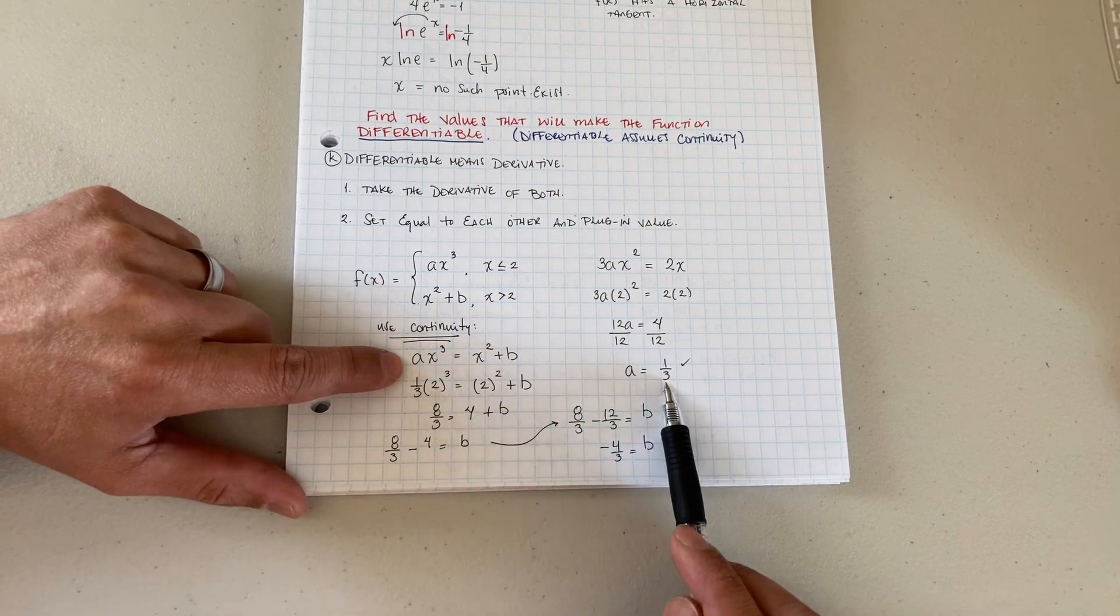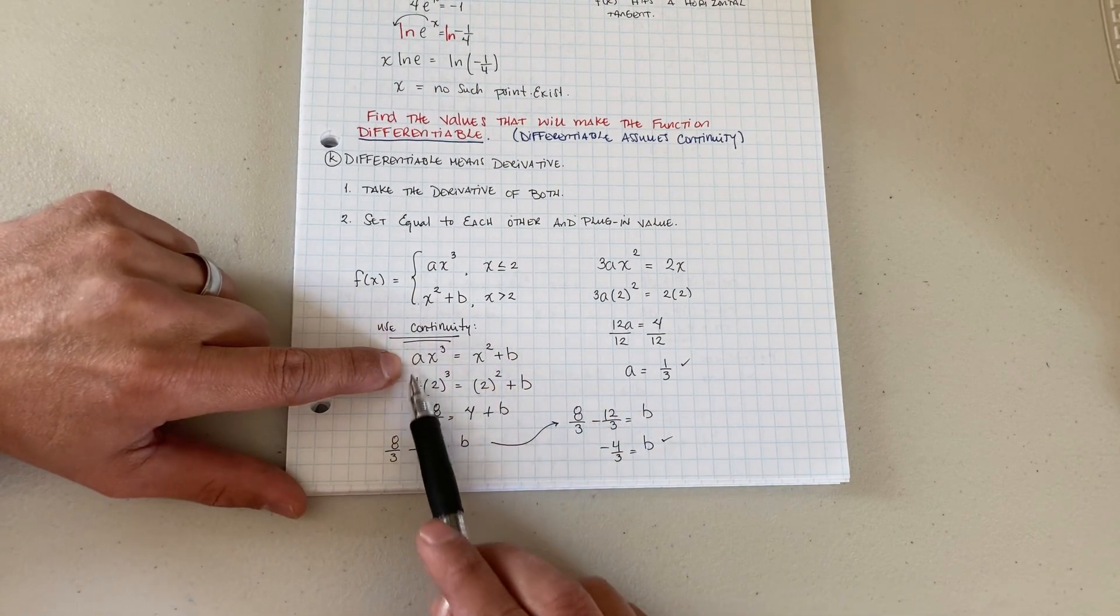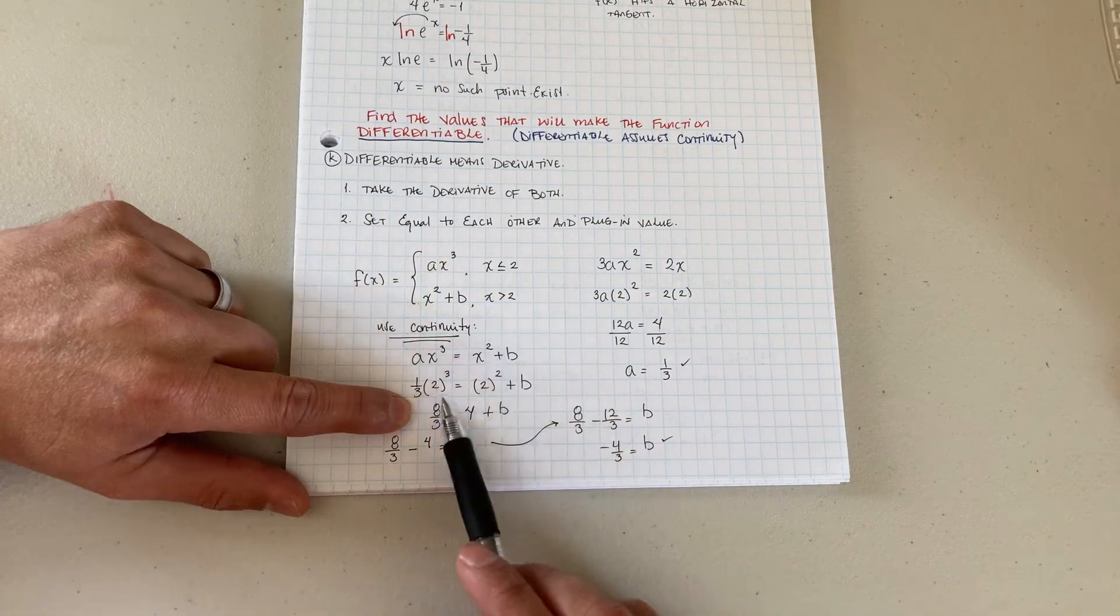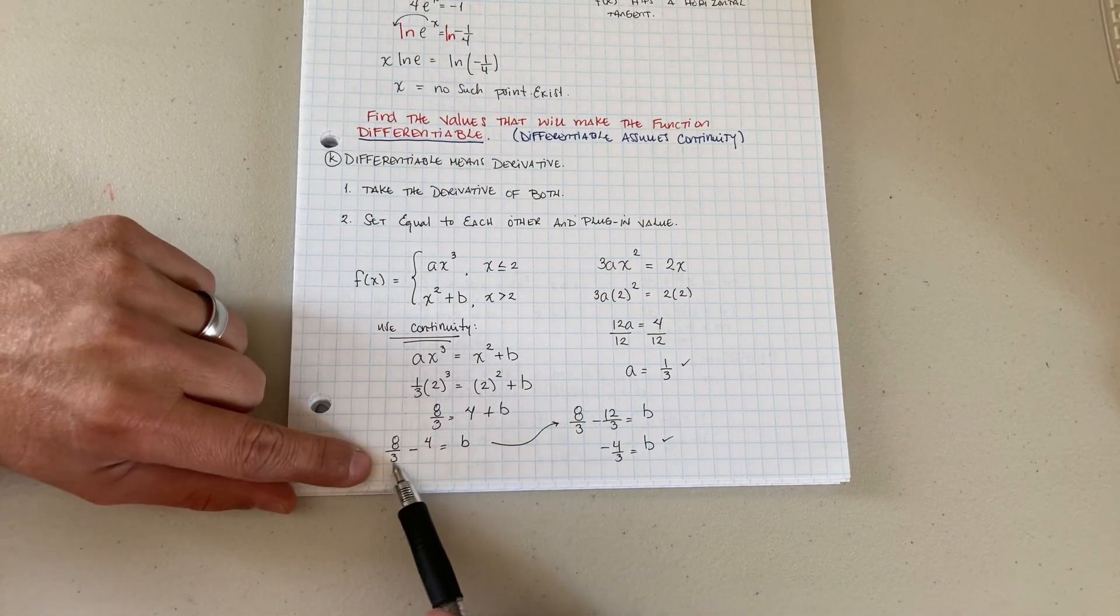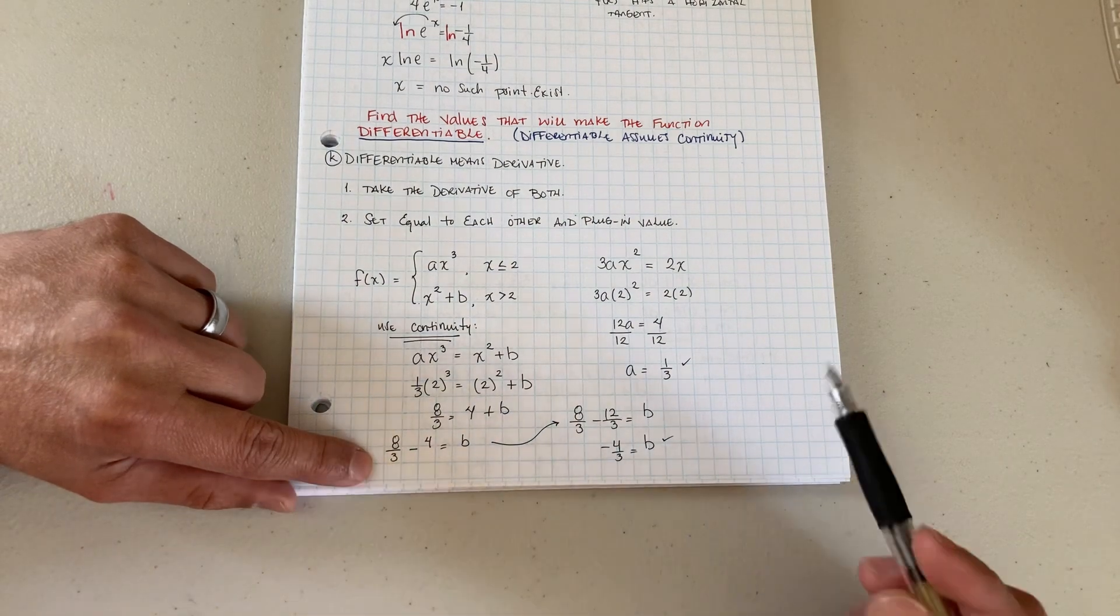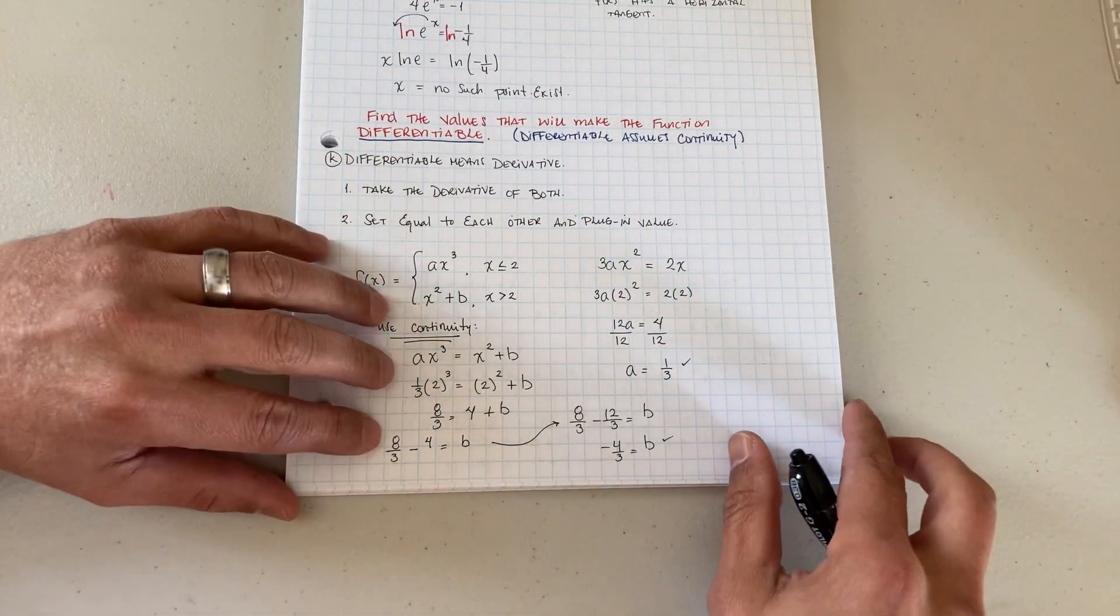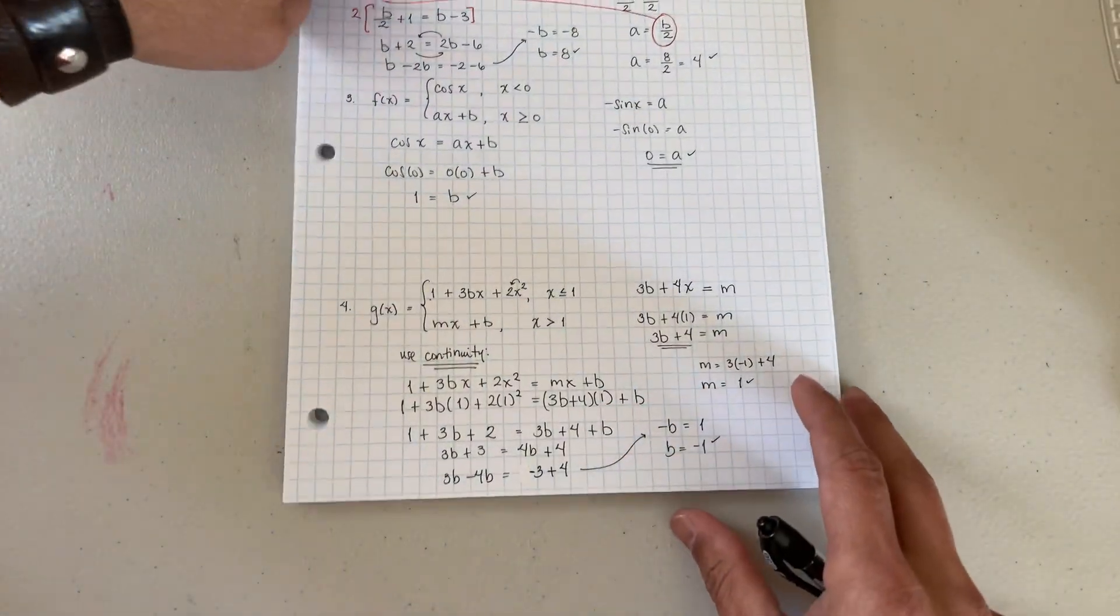So we set the left side equal to the right side and we plug in that value. But now you notice we have the value of a that we can use, so we plug in our a value, we plug in our 2, and now we can solve for the unknown which is b. We do the math and we end up with b is equal to negative 4/3. You see how I did that? So we're using differentiability first and then going back to continuity.